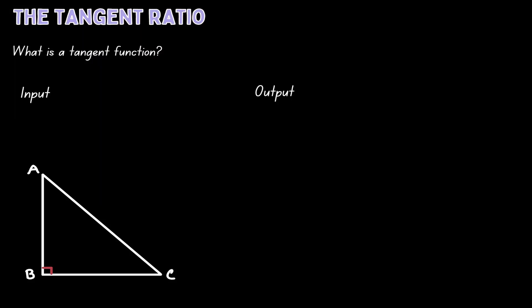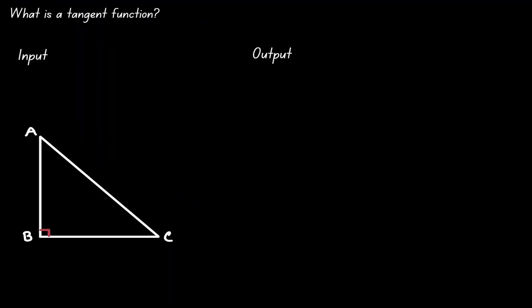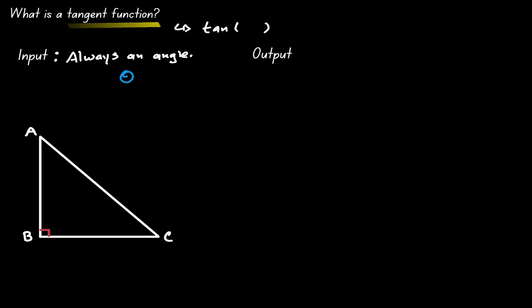Welcome, let's discuss the tangent ratio. We can think of tangent as a function, which we write as tan. The input of this function is always an angle. The symbol we have for angle is what we call theta, which is a circle with a small line going through it. In terms of our function, the input always goes inside the parenthesis. Whenever we plug in an angle into this function, we're going to get an output.